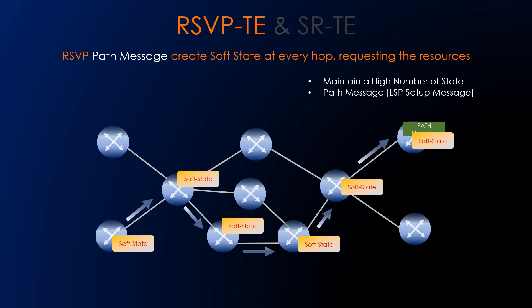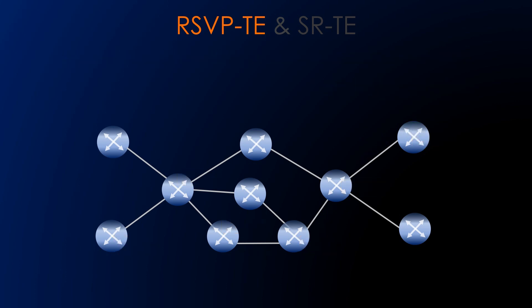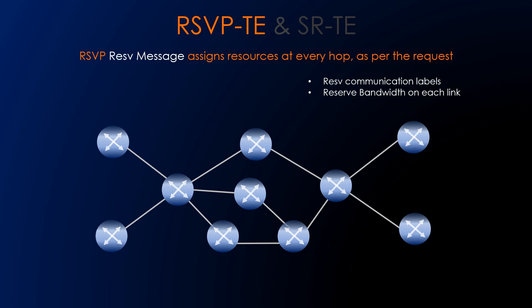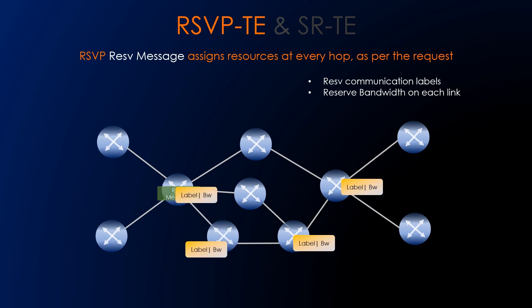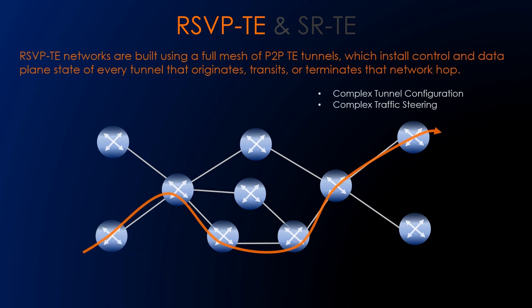RSVP-TE also suffers from scalability issues due to the large overhead caused by maintaining and distributing per-tunnel state information across the network. First, it sends a path message for LSP setup, and in every router it creates a soft state. Once the path message requests resources, it sends an RSVP reserve message hop by hop for label assignment, bandwidth assignment, and any resource attributes needed. RSVP-TE networks are built using a full-mesh P2P RSVP-TE tunnel, which installs control plane and data plane state in every tunnel that originates, transits, and terminates.